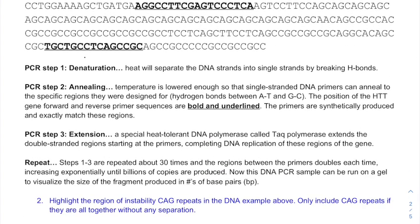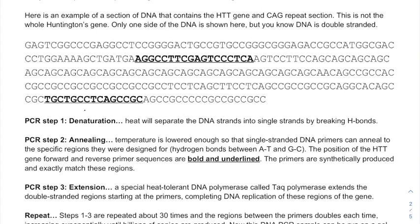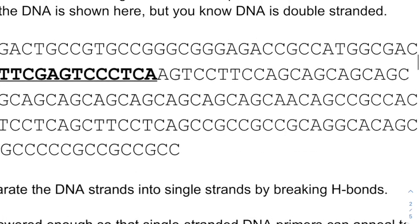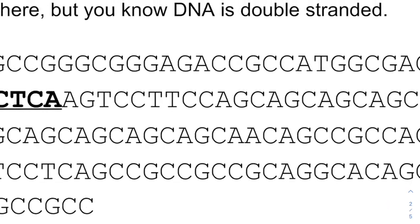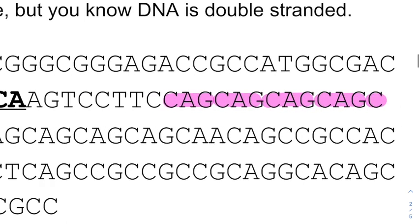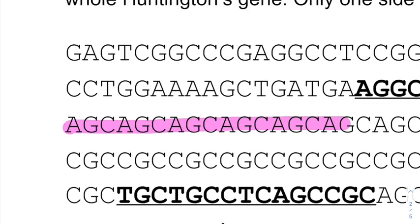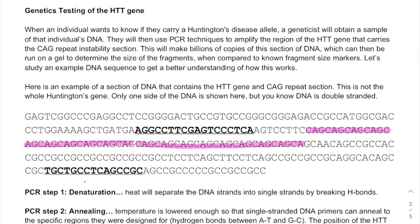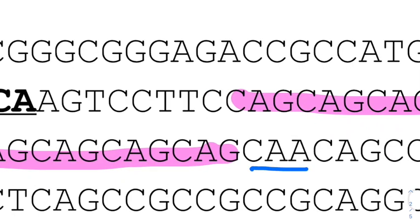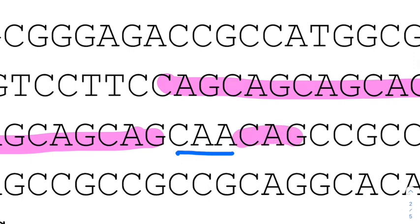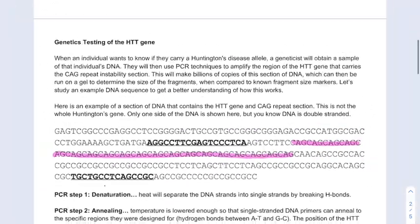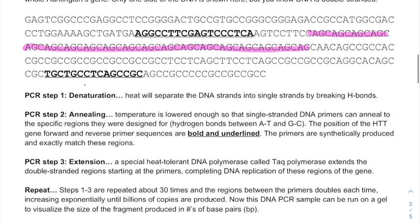Question two says to highlight the region of instability — the CAG repeats. If you look at this section of DNA and look for CAG repeats, you'll find a lot of them together. Starting right here, there's a whole bunch of them, and it continues on to the next row. I'm going to highlight all the CAGs in that region of instability. I stop there because that's no longer a CAG — it's a CAA. Even though there are a few other random CAGs throughout, we don't count those because they're not part of the continuous region.